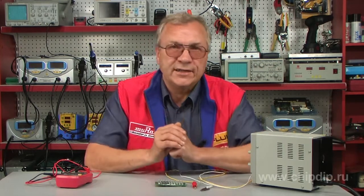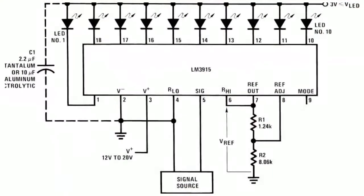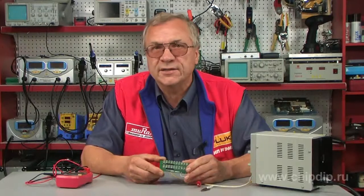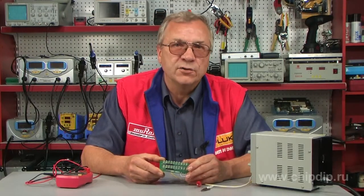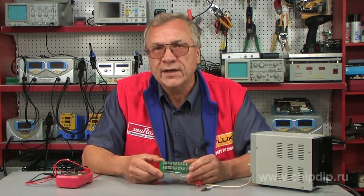The integral monolithic microcircuit LM3915N is one of such drivers, being an analogous light diode voltage measuring gauge, used to control the outlet voltage or the capacity of an amplifier sound cascade.